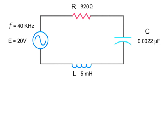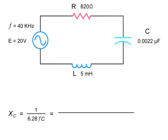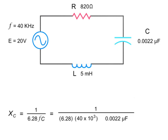To calculate the capacitive reactance in this series circuit, divide 1 by the product of 2π, the frequency, and the capacitance. So, substituting in the numbers, we have 1 divided by 6.28 times 40 kilohertz times .0022 microfarads, which equals 1,809 ohms.